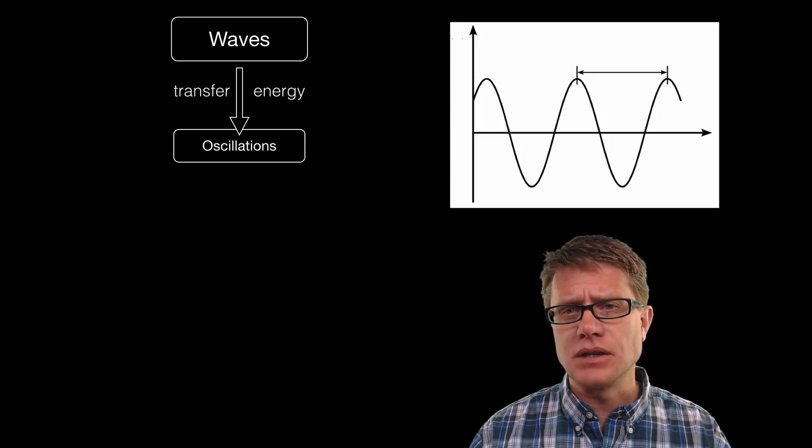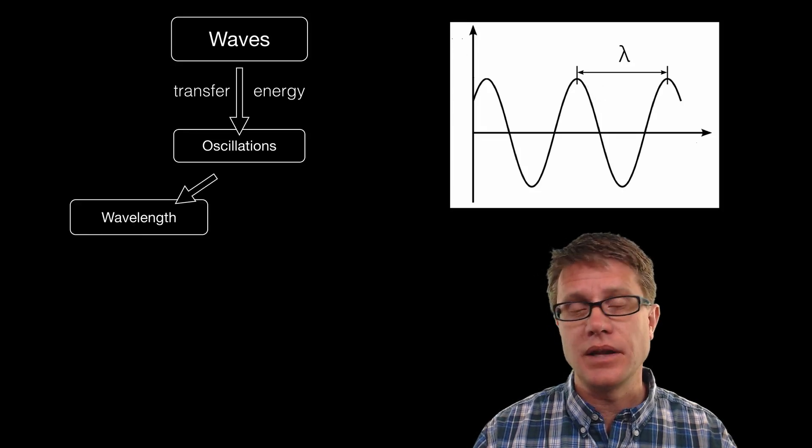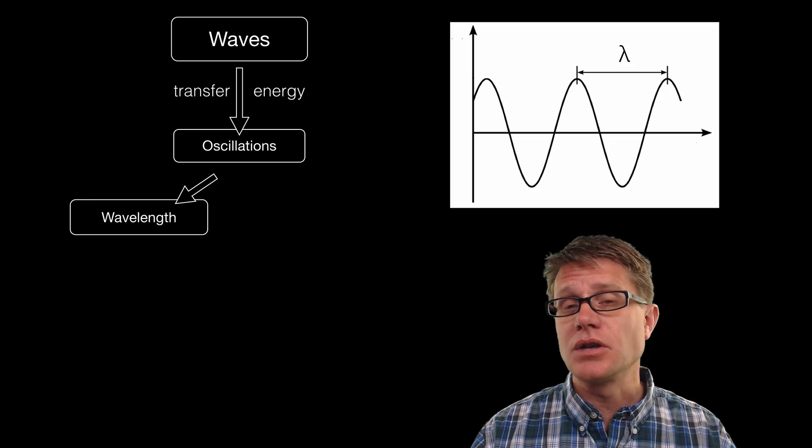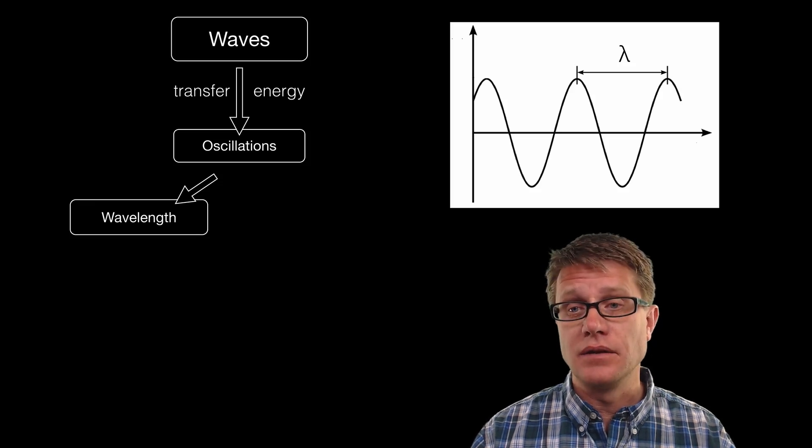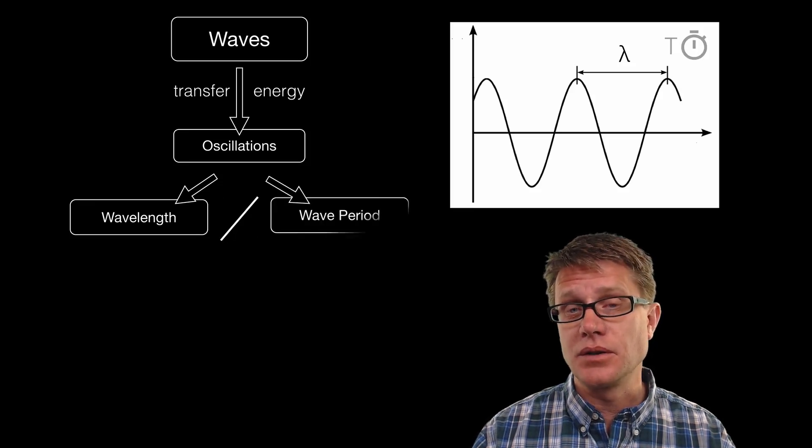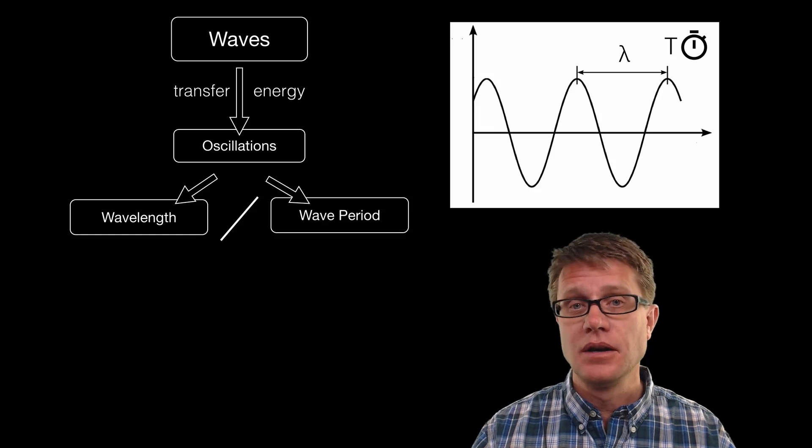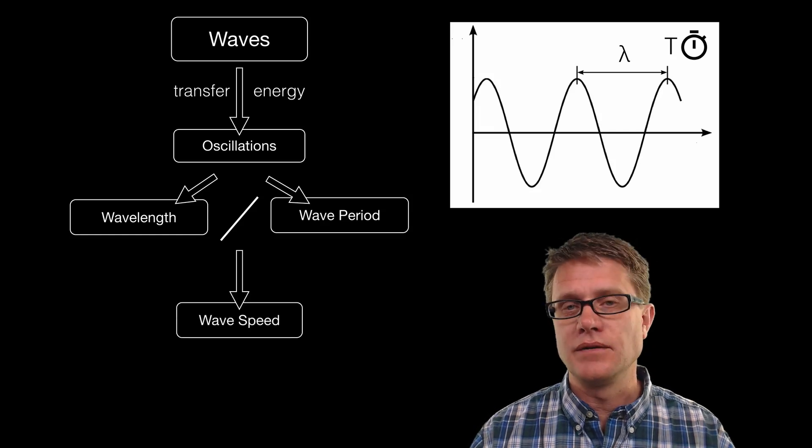Now how do we measure distance when it comes to waves? That is going to be the wavelength or lambda. How do we measure time when it comes to waves? That is going to be the period. So if we simply divide the wavelength by the period, we have now calculated the wave speed.